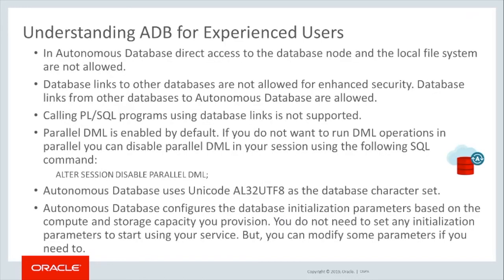In Autonomous Database, direct access to the database node and the local file system are not allowed. Database links to other databases are not allowed for enhanced security. Database links from other databases to Autonomous Database are allowed, but calling PL/SQL programs using database links is not supported. Parallel DML is enabled by default. If you do not want to run DML operations in parallel, you can disable parallel DML in your session using the SQL command: ALTER SESSION DISABLE PARALLEL DML.